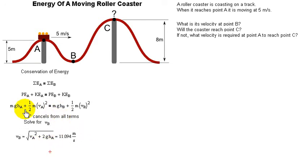All you've got to do is solve for velocity at B. Doing the algebra manipulation of this equation, VB is the square root of velocity at A squared plus 2GHA. Plugging it into your calculator, you get 11.09 meters per second. That's how fast it's going at point B.